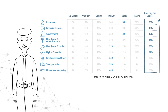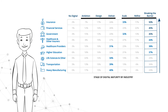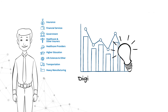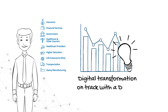What we see across different business industries is varying levels of success. Data and analytics maturity is holding back business transformation efforts. Most organisations are still in that deliver, design and ambition phase when they have aspirations to be in the scale and refine phase, breaking through the barrier of digital transformation. Without a data and analytics strategy, it is going to be increasingly difficult for these industries to be successful. They will continue to be vulnerable to new entrants with digital business models.